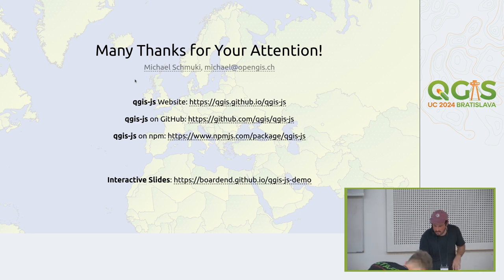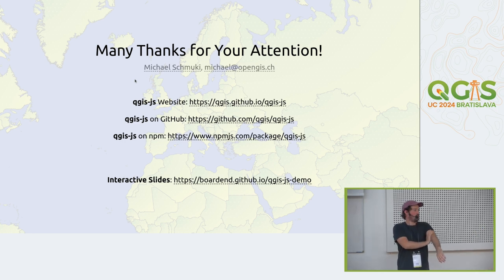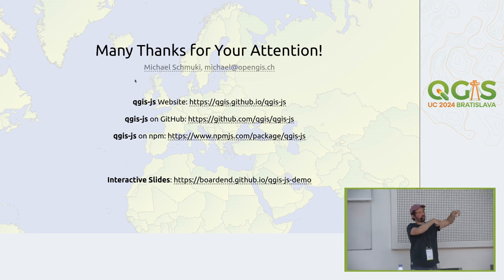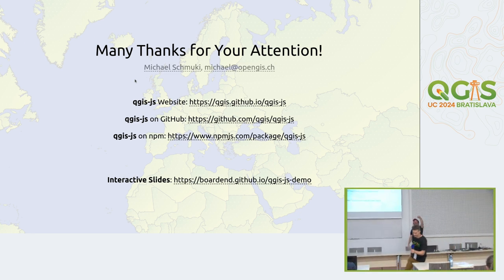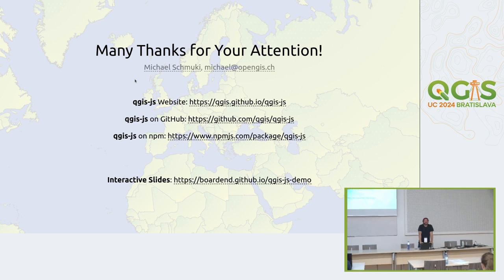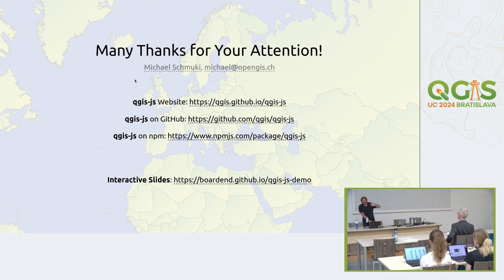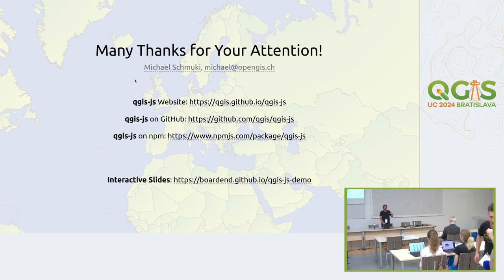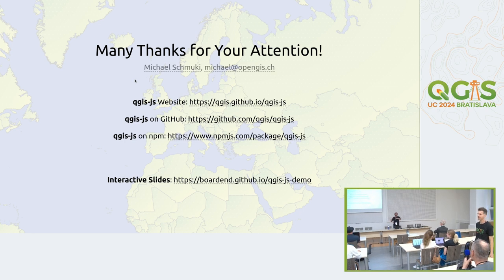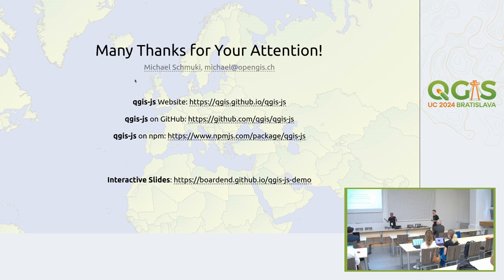Thank you very much, Michael. Martin did a lot of the work too, so it was a joint effort. Question from the audience: regarding coordinate systems — is it possible to use different ones, like Arctic Polar Stereographic? Yes, absolutely — PROJ is behind the whole stack, and you can use any coordinate system in the world. And it's also supported by OpenLayers, so you don't have to convert anything — OpenLayers handles that too.